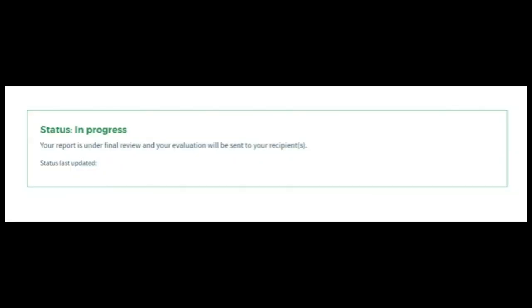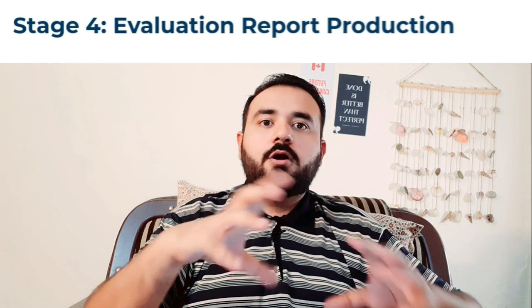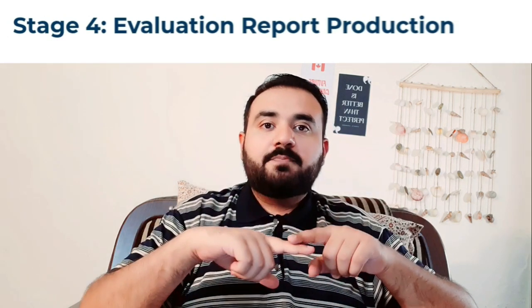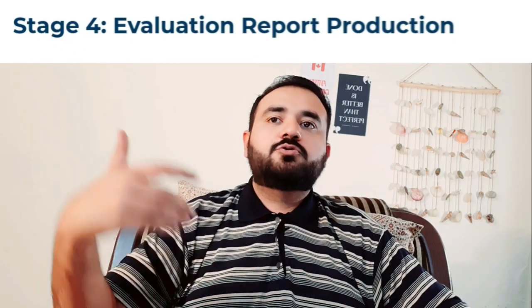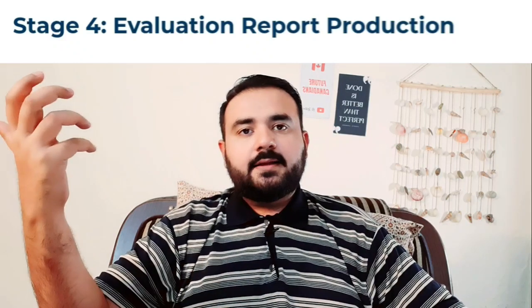Once your additional secondary documents have reached WES, the evaluation report will be produced and your status will be 'in progress — your report is under final review.' Your evaluation will then be sent to your recipients. You basically choose recipients — for example, IRCC is an automatic recipient when you are choosing the immigration plan for Educational Credential Assessment. If you want to send your WES report to a third party, you can also choose that recipient, but it is not required at this stage. At that point your application is complete.